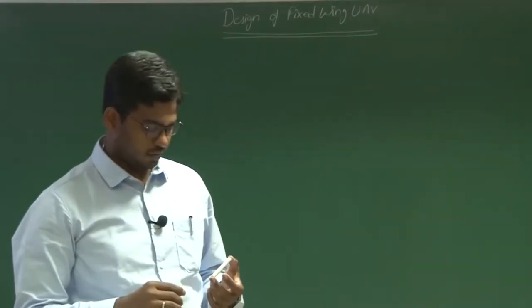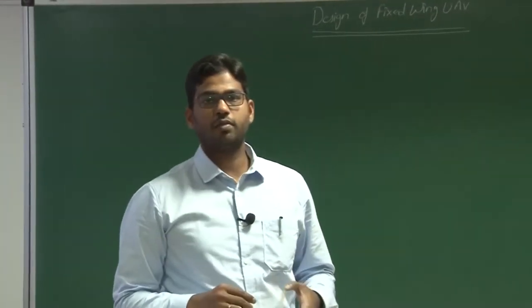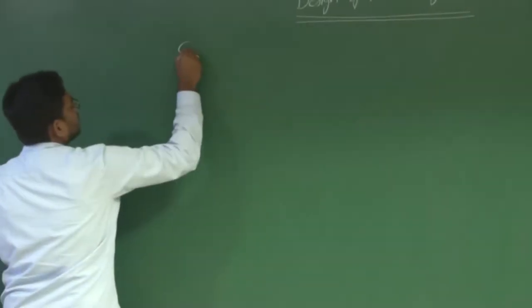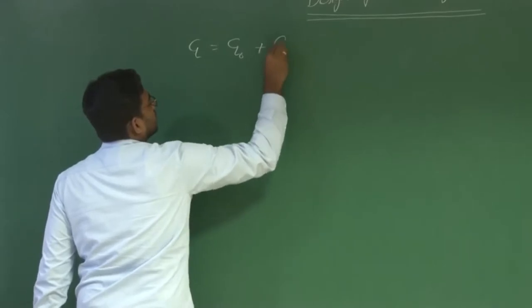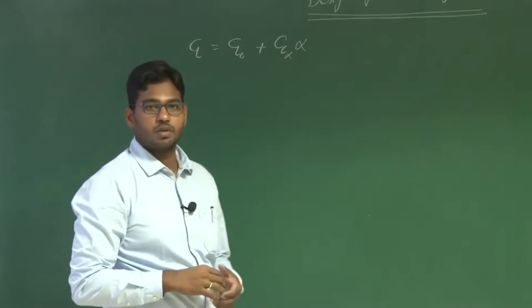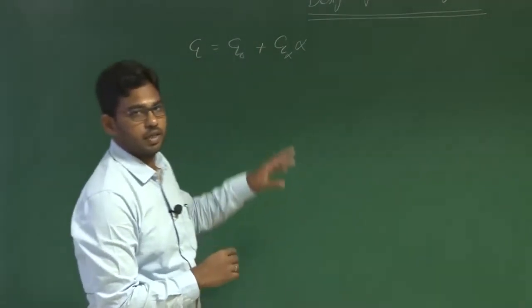Hello friends, welcome back. In our previous lecture, we were discussing about center of pressure, aerodynamic center and the relationship between them. We also witnessed how Cl varies with angle of attack and how we can model mathematically Cl variation with alpha. We saw that Cl equals Cl-naught plus Cl-alpha into alpha, which corresponds to variation of lift coefficient with angle of attack in the linear regime.